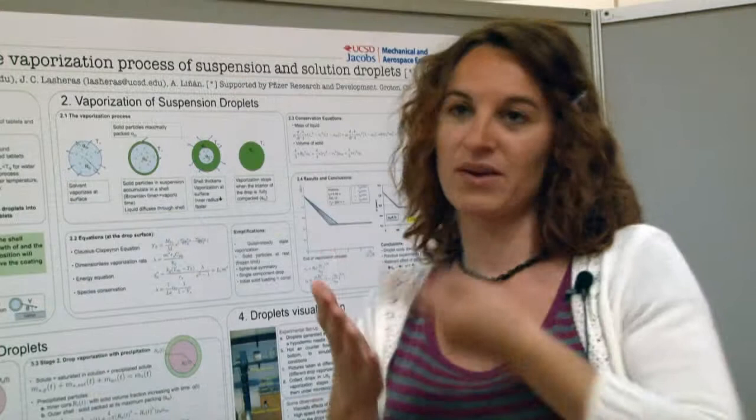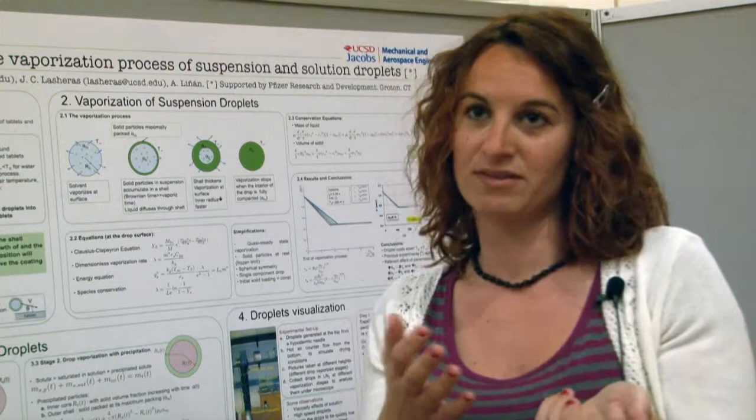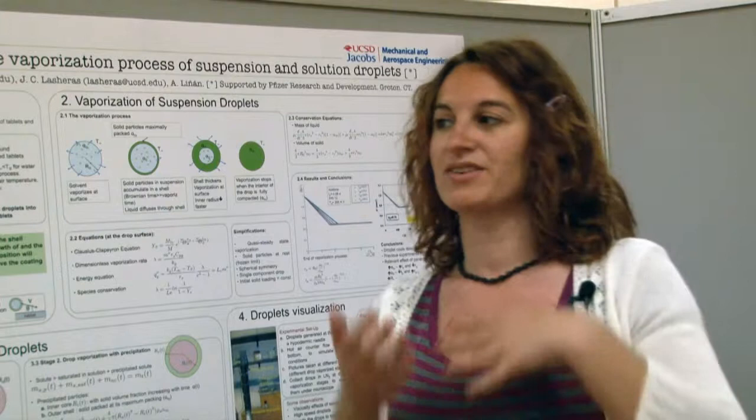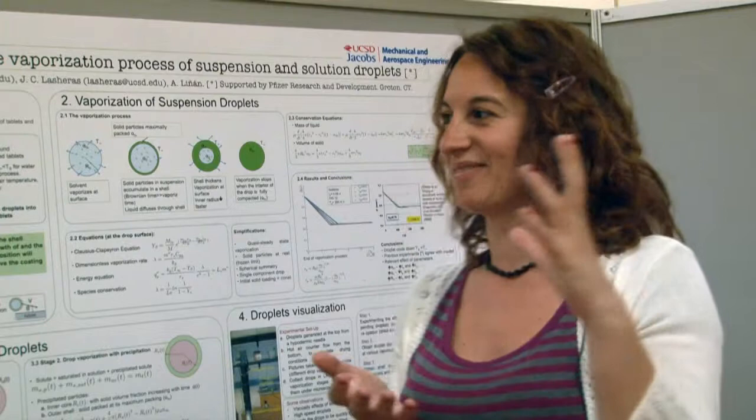That coating has to be very homogeneous and the deposition of those layers has to be very well controlled. When they're trying to coat those tablets, they're seeing that they don't have a very homogeneous coating. So we're trying to understand why that happens — the spray is actually drying before impacting onto the tablet. We're trying to understand that process better so we can solve the problem they're having right now.